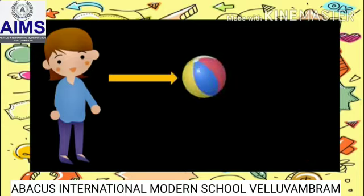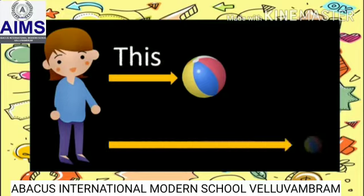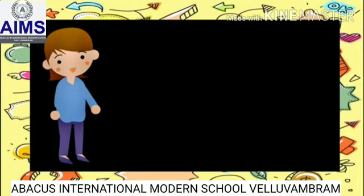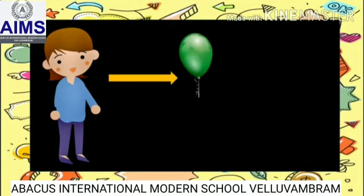This is a ball. Here I am using 'this'. And look here — that is a ball. I am using 'that' here because the ball is far from me.